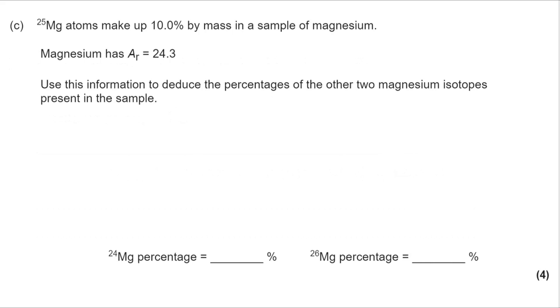On to what's quite a common calculation here, one of the more complicated mass spectra calculations. We know that we have 24, 25, and 26 as the three different isotopes of magnesium. We're only told the percentage by mass of magnesium 25.